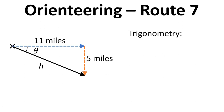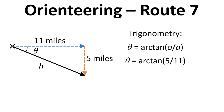Another way we could have done this is to use the inverse tangent, or arc tangent. To get theta we need opposite over adjacent, so we go arc tan of 5 over 11, and again that works out to be 24.4 degrees.